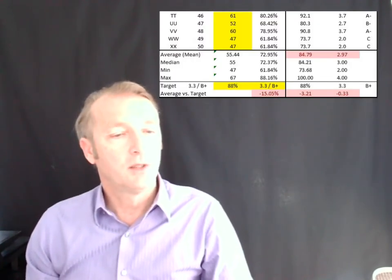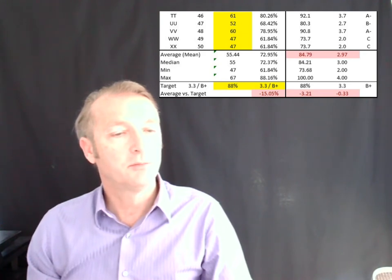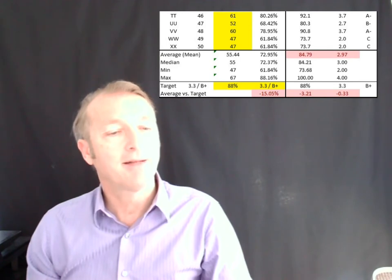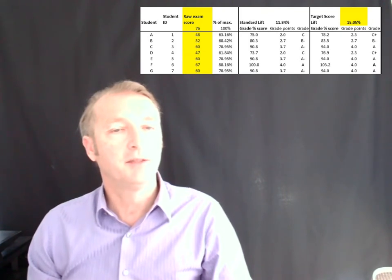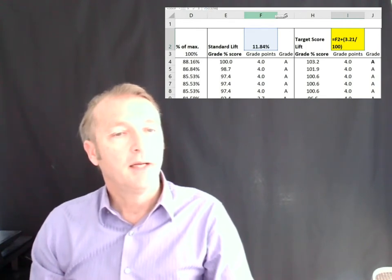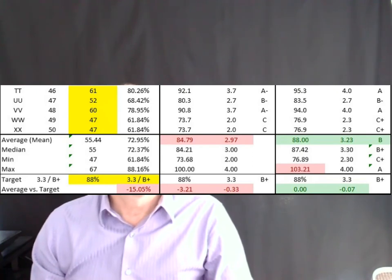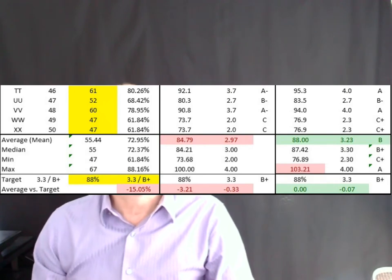What we do next is look at the average grading — we are 3.2% too low — so we take that and add it to the lift. I've added that score to 11.84, giving us a lift score of 15.05%. I apply that in the column called grade score percentage, lifting it further with that extra amount. The average is now where we need it to be at 88%. However, the problem is we now have a maximum score of 103, and we only want that to be 100.